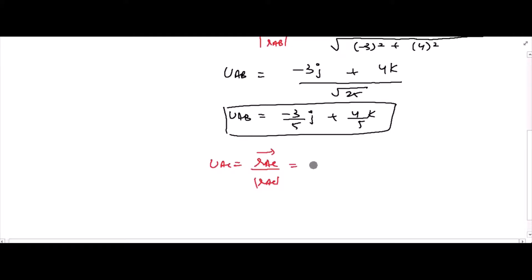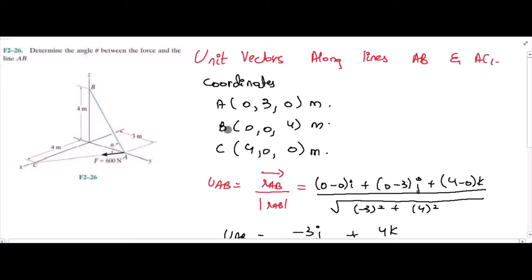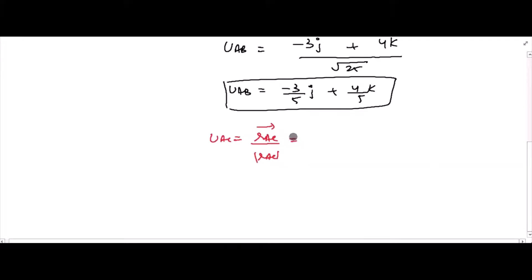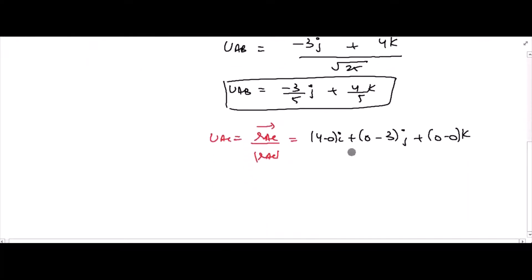RAC can be found by the coordinates of point C minus coordinates of point A. So, we have 4-0i plus 0-3j plus 0-0k divided by square root of 4 squared plus negative 3 squared.